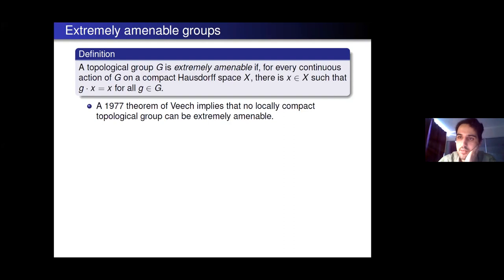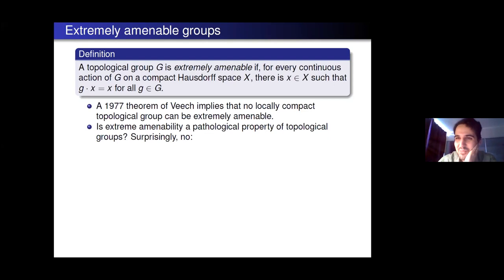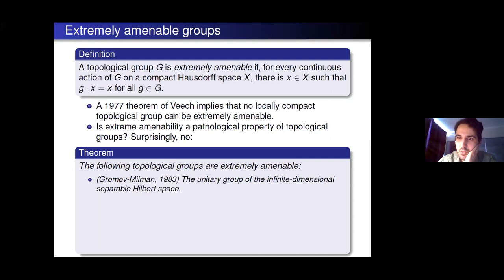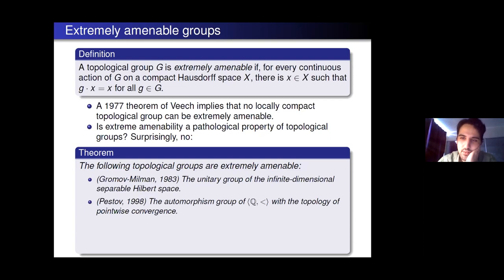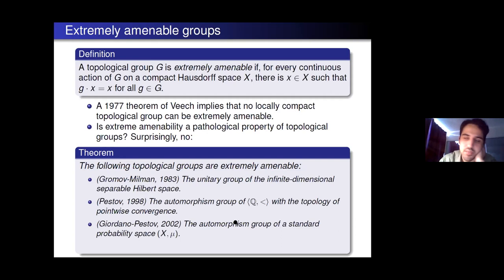In 1977, Veech showed that no locally compact topological group has this property. So it was thought for a while that these groups are in some sense pathological, and initially people didn't even know if there were any naturally occurring examples. Well, if it was pathological, I wouldn't be giving this talk. Surprisingly, the answer is no — there are a lot of natural examples. In 1983, Gromov and Milman showed that the unitary group of the infinite-dimensional Hilbert space is extremely amenable. Pestov showed that the automorphism group of the rationals equipped with the topology of pointwise convergence is also extremely amenable. And if you take the automorphism group of a standard probability space, that's another example.